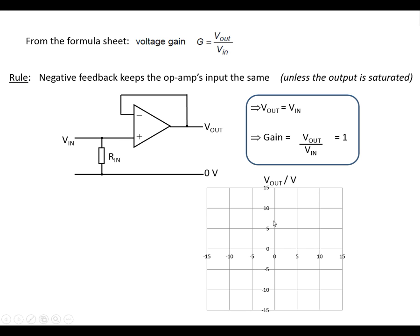We've got a graph of V out on the y-axis, V in on the x-axis. What we see on this one is that we get the same voltage out as we get going in, unless we get to beyond 13 volts. So the output's going to saturate at plus 13 or minus 13 volts. That's the graph showing the characteristic of this circuit.